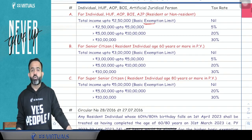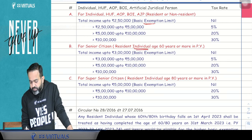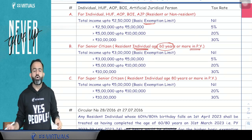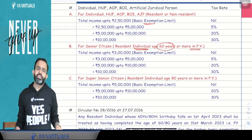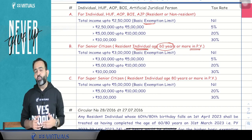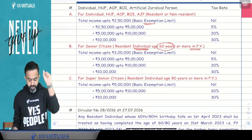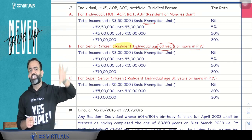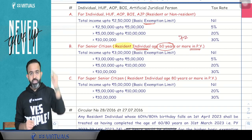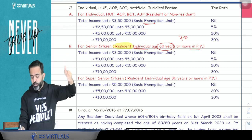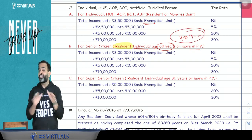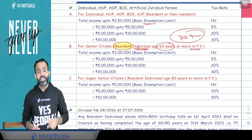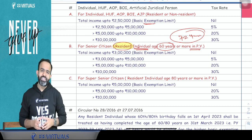Now, in case of the senior citizen — what is the meaning of senior citizen? Senior citizen means a resident individual who is 60 years or more in the previous year. If any resident individual's age is 60 years or more in the previous year, that person is called a senior citizen. In case of senior citizen, up to ₹3,00,000 is basic exemption. ₹3,00,000 to ₹5,00,000 at 5%, ₹5,00,000 to ₹10,00,000 at 20%, more than ₹10,00,000 at 30%. Remember, lawmakers mention resident individual. For example, if Mr. Lobo is located in USA and his age is 72 years, being a non-resident, he will not be treated as a senior citizen.